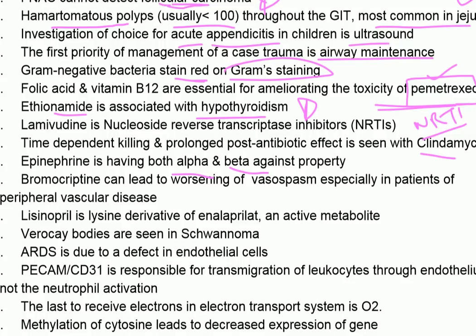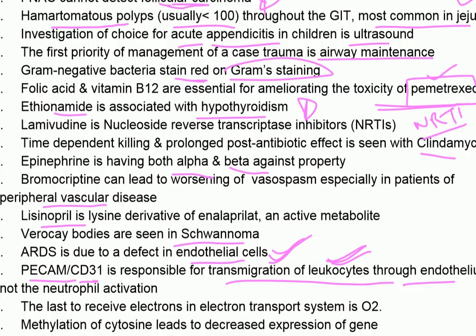Epinephrine has both alpha and beta agonist properties. Bromocriptine can lead to worsening of vasospasm in patients with peripheral vascular disease. Lisinopril is a lysine derivative of enalapril and is an active metabolite. Verocay bodies are seen in schwannoma. ARDS is due to a defect of endothelial cells. PECAM (CD31) is responsible for transmigration of leukocytes through endothelium.